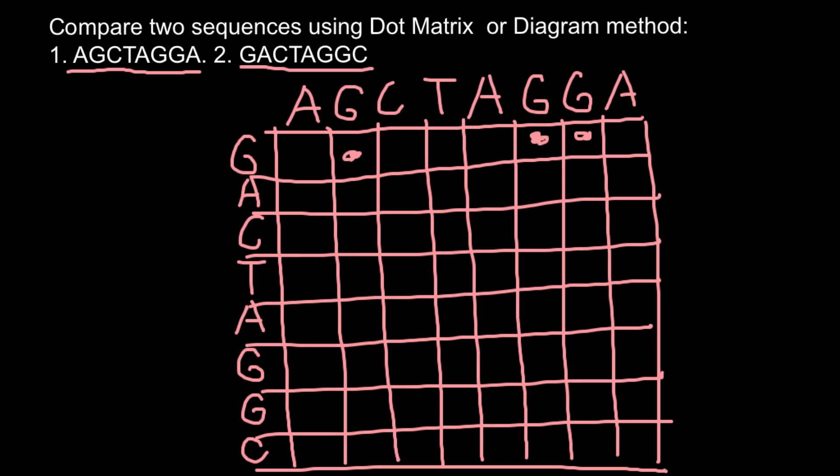We do the same with the second row: we have dots here and here. Next row: here and here. Next row: here, here, and here. Next row: here and here. Next row: here and here. Next row once again: here, here, and here. And the last row would be a dot here. That's it. Now we have built a dot matrix diagram.